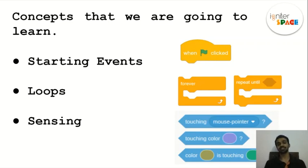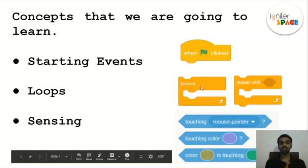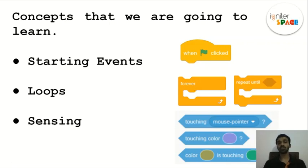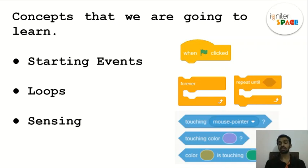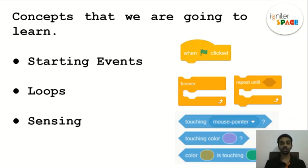We're also learning about loops. Whatever you put inside a loop will happen again and again — sometimes forever. This is called a forever loop. We also have another type called a repeat-until loop, for example: jump until one o'clock, where you stop when a condition is met. Then there are sensing tabs — in games, sensors detect collisions, like if a car hits a human you lose the game.